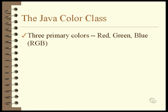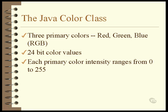Java uses a color system based on varying the intensity of the three primary colors: red, green, and blue. This is sometimes called the RGB system. Each color is stored as a 24-bit value with each of the primary colors taking 8 bits, meaning each primary color can be in the value range 0 to 255. A value of 0 means no color and a value of 255 means the color is at its maximum intensity.